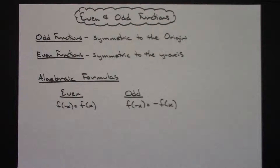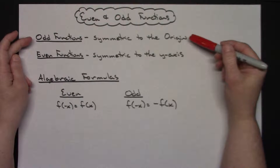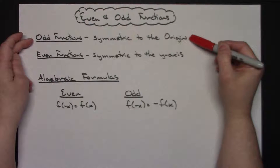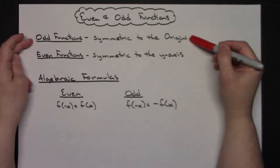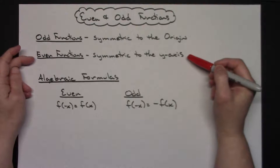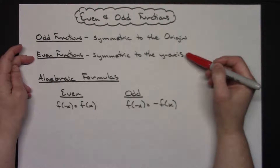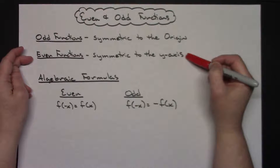Today I want to take a look at even and odd functions — how you can algebraically work out a function and determine whether it is an even function, odd function, or neither. Odd functions are symmetric to the origin, so if you're looking at the graph you can test to see if it looks symmetrical around the origin. Even functions are symmetric to the y-axis, so if you have a picture of the graph you can look at it and see if it is symmetric to the y-axis.